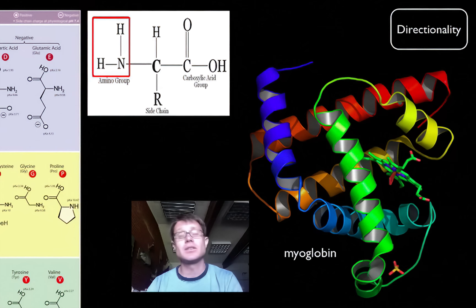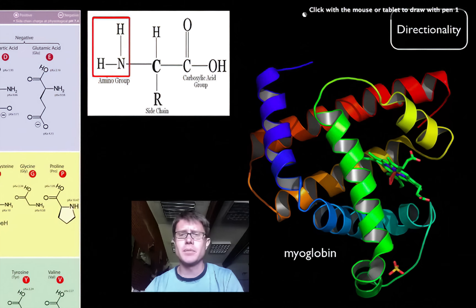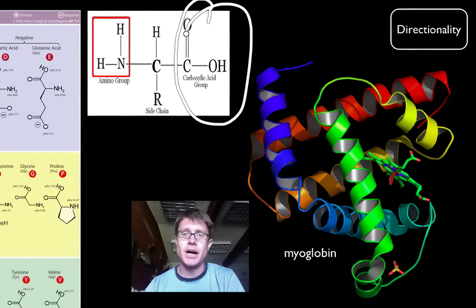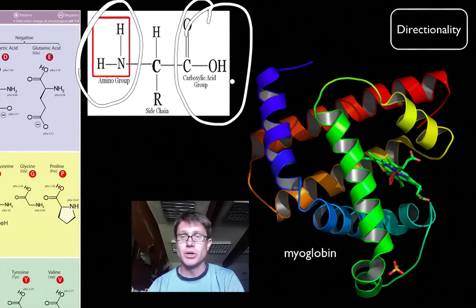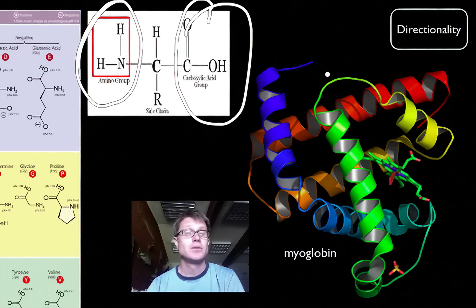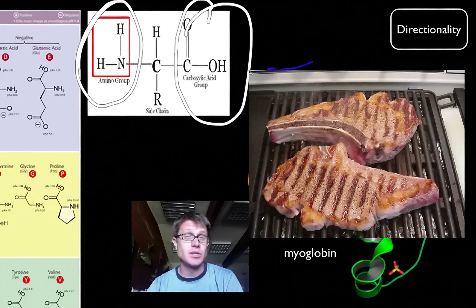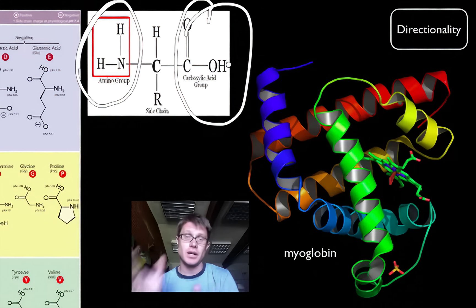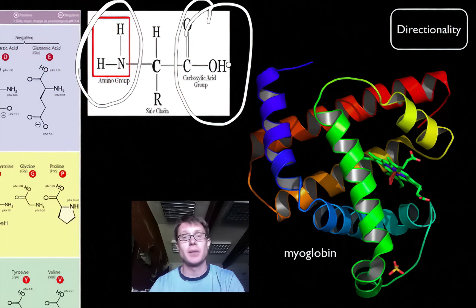Proteins also have directionality — just like DNA had a 5 prime and a 3 prime, proteins have a carboxyl side and an amino side. As we hook them together we get a directionality or sidedness to a protein. For example, when I eat a big steak, two enzymes break down those proteins: trypsin and chymotrypsin. They each work on different sides and gobble up that protein until we break it down into its amino acids, which we can use to make our own proteins.